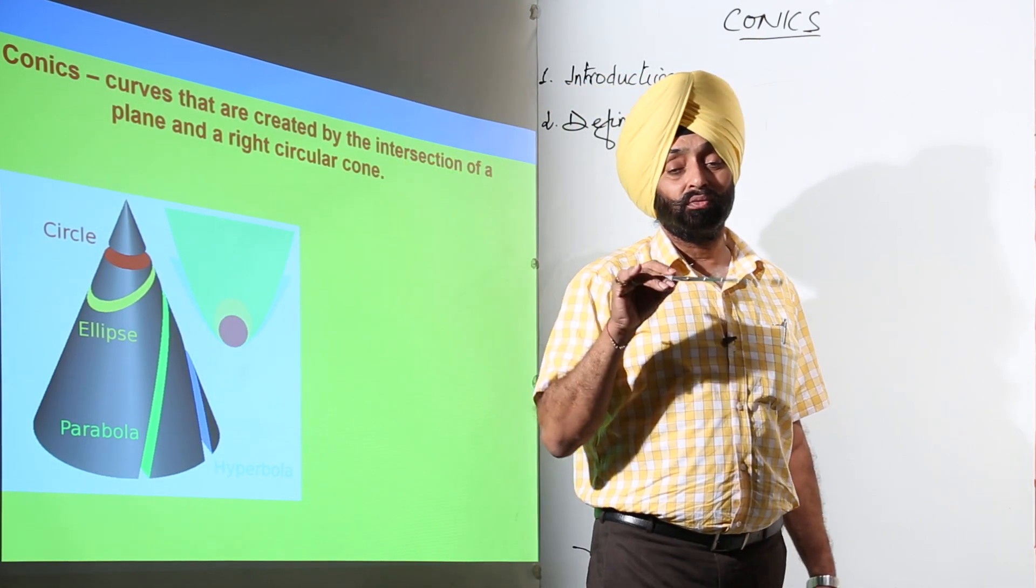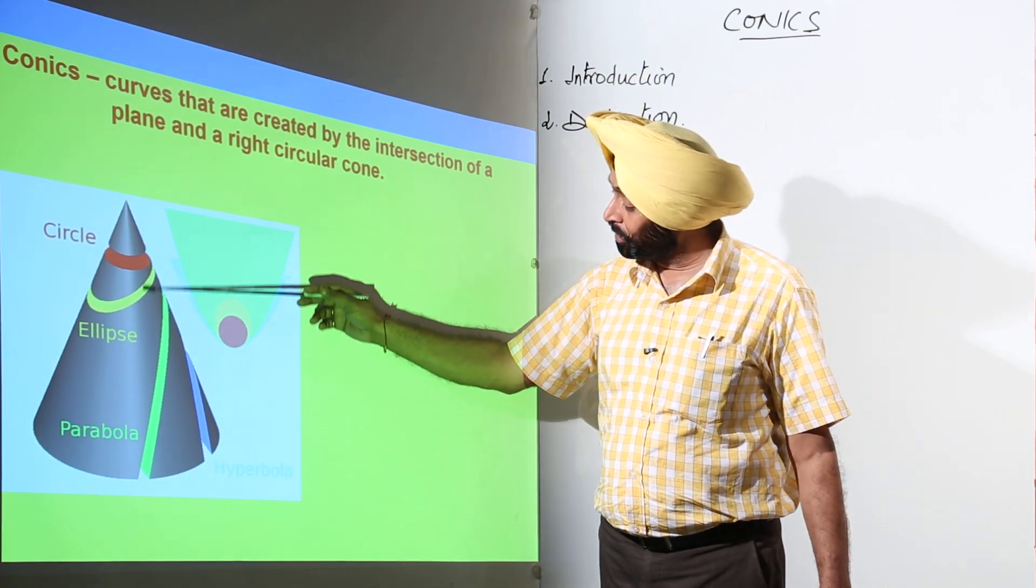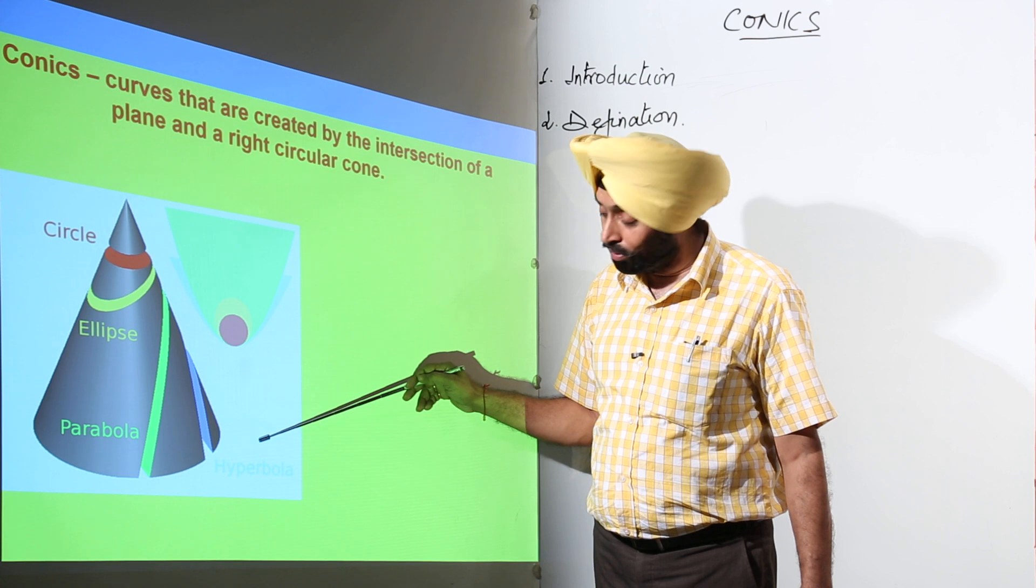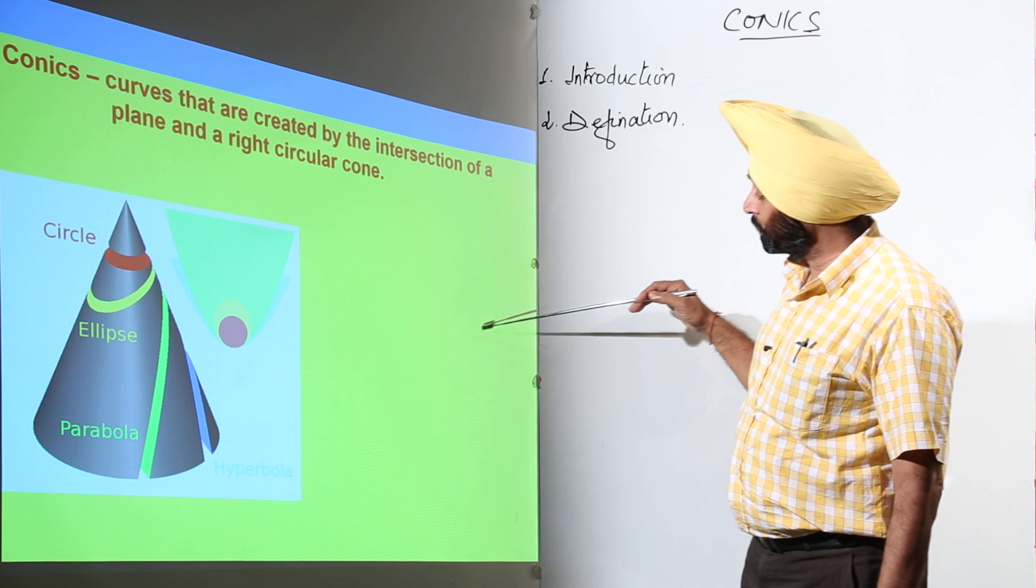Intersection of a plane with a double-napped right circular cone generates different figures, and these figures are circle, ellipse, hyperbola, parabola - all these things. After this one, just look towards this figure.